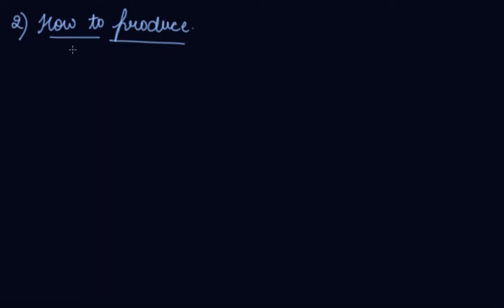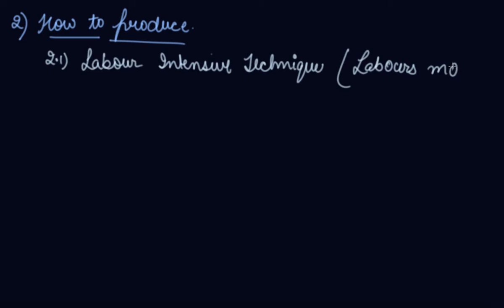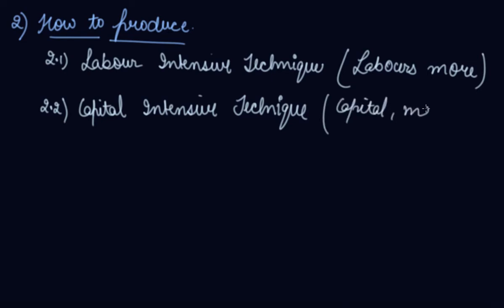The second problem is how to produce. The technique of production is again a second thing that you have to decide upon. The first can either be a labor-intensive technique, which means you are using your labor more. The second is your capital-intensive technique, that means you are using capital or machines more than labor. Everything is automatic. Your machine does everything.